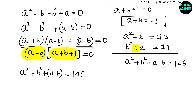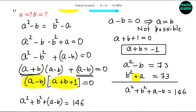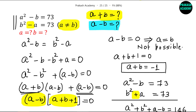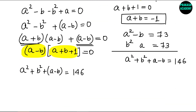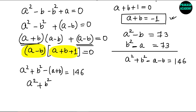Since we have A² plus B² minus (A plus B), and we already know A plus B equals minus 1, we substitute: A² plus B² minus (−1) equals 146, so A² plus B² plus 1 equals 146, which means A² plus B² equals 145.